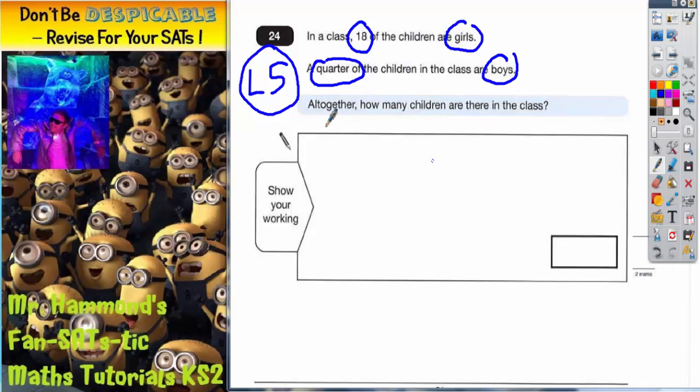Remember, altogether is just a posh word for the total. Now the easiest way to do this one is to think about fractions and pizzas. So if I draw a circle to represent the whole class and split it into quarters, let's think about what we can fill in here.